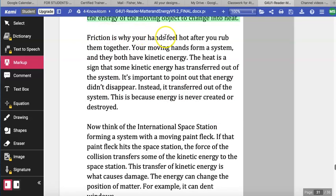Friction is why your hands feel hot after you rub them together. Your moving hands form a system, and they both have kinetic energy. The heat is a sign that some kinetic energy has transferred out of the system. It's important to point out that the energy did not disappear. Instead, it transferred out of the system. This is because energy is never created or destroyed. It just changes its form.